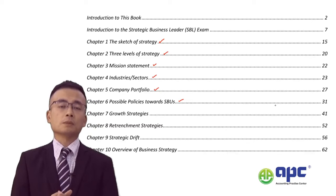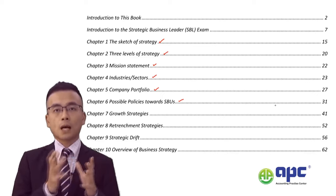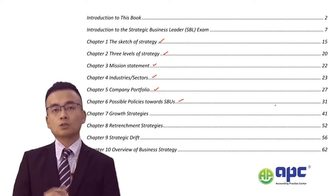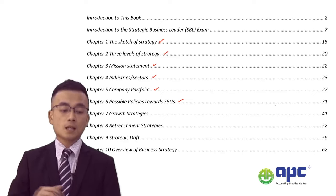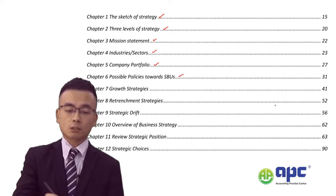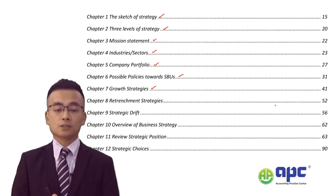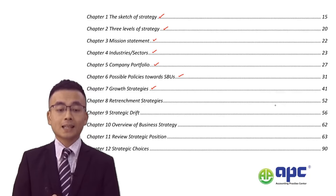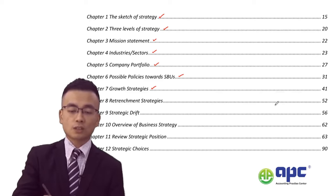SBUs simply mean different industries or perhaps different geographical locations that businesses are in. Moving on to chapter seven, we'll be looking at growth strategies — how we can expand our businesses.